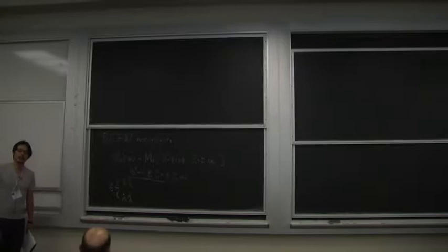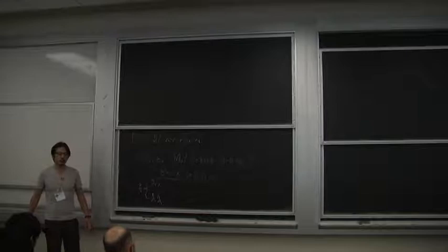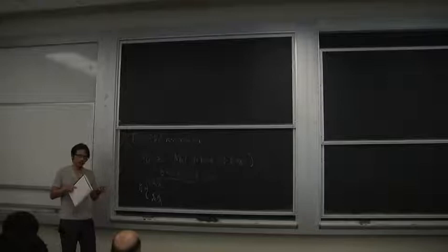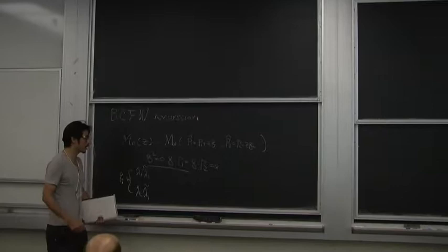The reason I want these three conditions is because after this deformation, I want to maintain the kinematics of a usual scattering amplitude. In other words, my momentum is still conserved, and P1 hat and P2 hat squared is still zero. As we discussed yesterday, this tells you that you have two solutions: you can choose either Q to be lambda_1 tilde lambda_2 or lambda_2 lambda_1 tilde. These two choices correspond to the different colors of the two vertices when you attach the BCFW bridge.